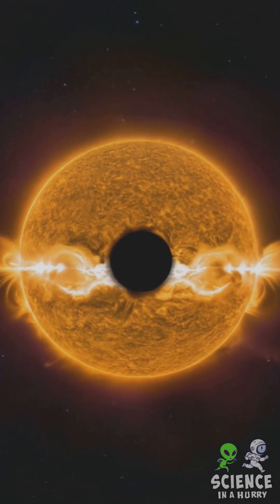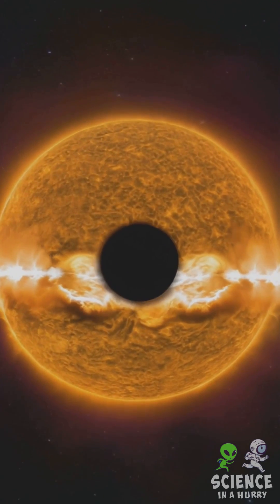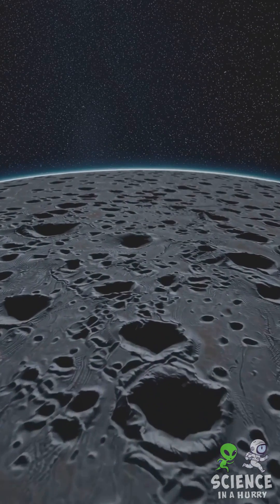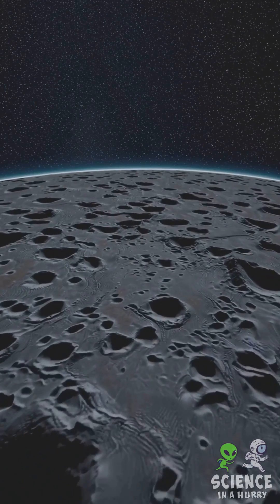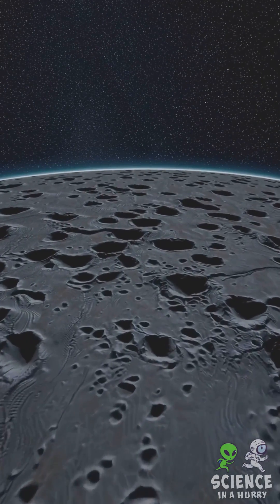Despite its proximity to our star, its surface isn't perpetually blazing hot. Nighttime temperatures plummet to a frigid minus 180 degrees Celsius, or about minus 290 degrees Fahrenheit.